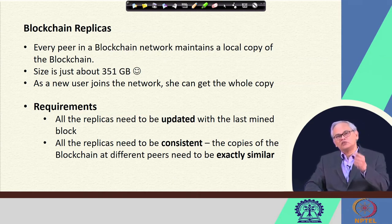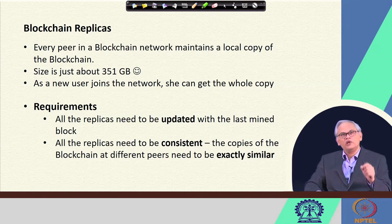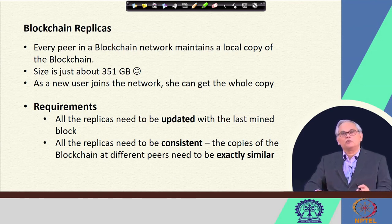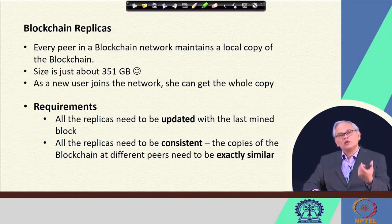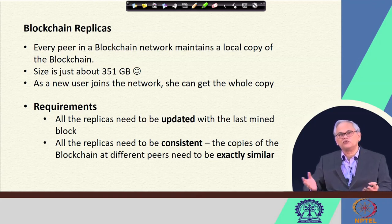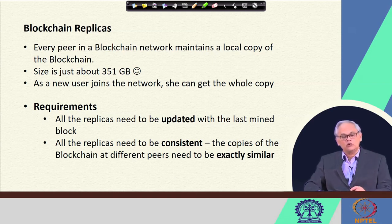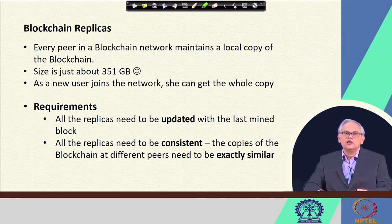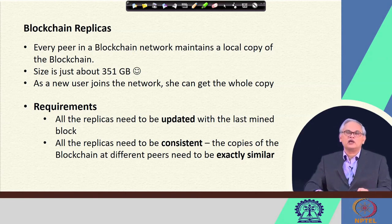Each node in the Bitcoin blockchain network is a peer node, and each maintains a local copy of the blockchain. You and I can also join this network and get the entire Bitcoin blockchain — all blocks since the very first block, the genesis block. The size is not very high, about 350 GB, so we can have the entire network available on our own machines. As a new user joins the network, she can also get the whole copy, updated in real time.